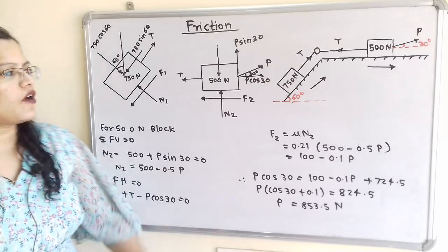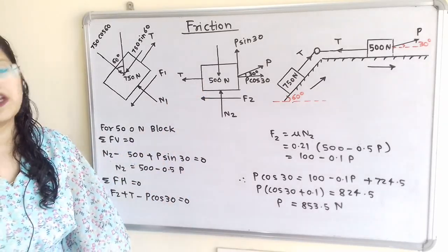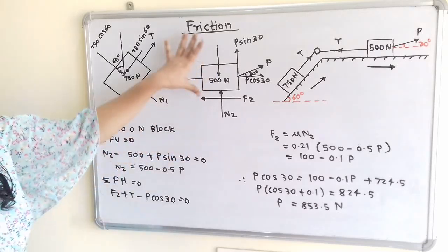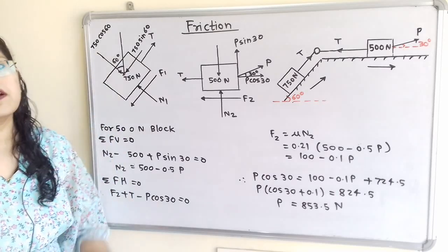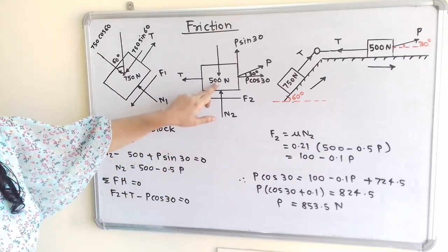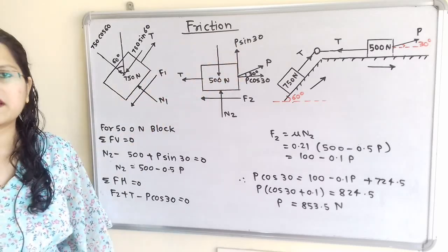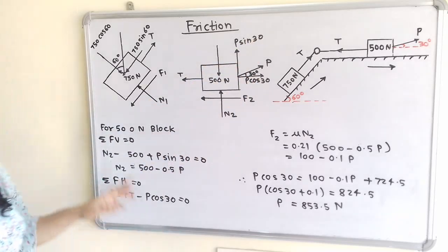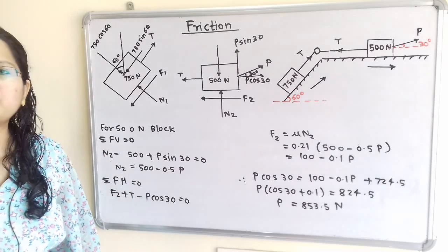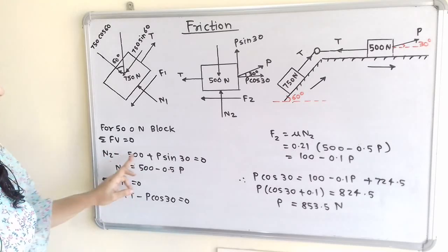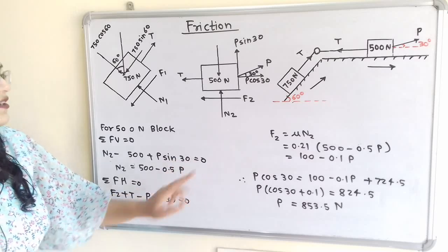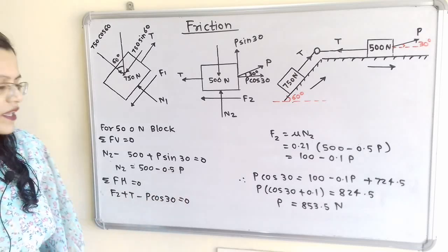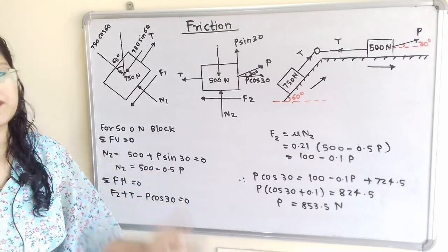Considering the equilibrium of the 500 N block, the summation of all vertical components equals zero. The vertical forces are N2 (upward), 500 N (downward), and P sin 30 (upward). So N2 minus 500 plus P sin 30 equals zero. Therefore, N2 equals 500 minus 0.5P.